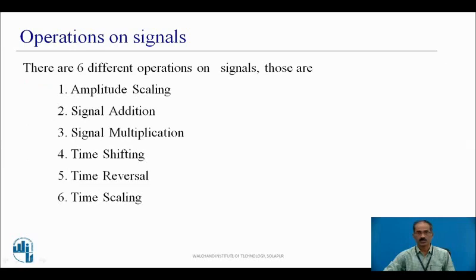Operations on signals — there are six different operations: amplitude scaling, signal addition, signal multiplication, time shifting, time reversal, and time scaling. The first three are related to amplitude and the later three are related to time. The later three are also called the transformation of independent variable T.